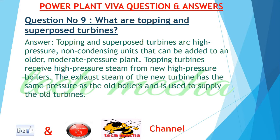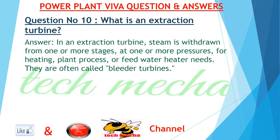Question number 9: What are topping and superposed turbines? Topping and superposed turbines are high pressure, non-condensing units that can be added to an older, moderate pressure plant. Topping turbines receive high pressure steam from new high pressure boilers. The exhaust steam of the new turbine has the same pressure as the old boilers and is used to supply the old turbines.